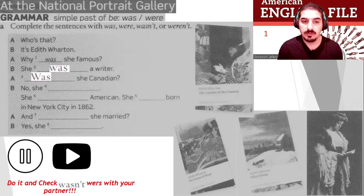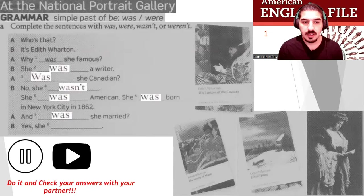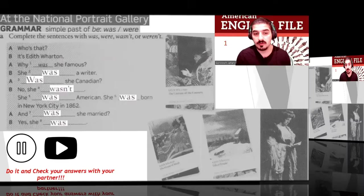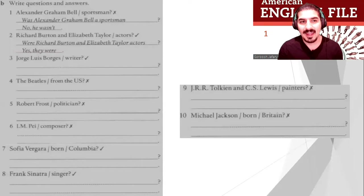Let's do it together. She was a writer. Was she Canadian? No, she wasn't. She was American. She was born in New York City in 1862. And was she married? Yes, she was. Very good, well done.